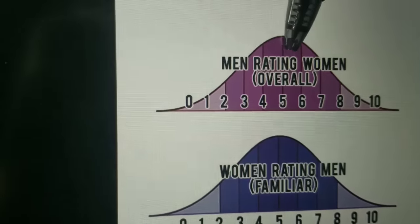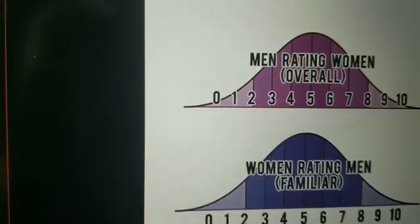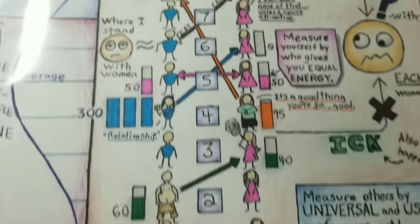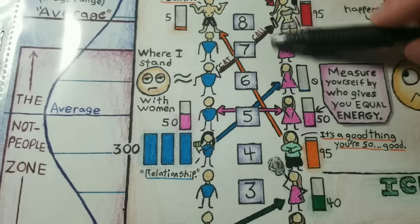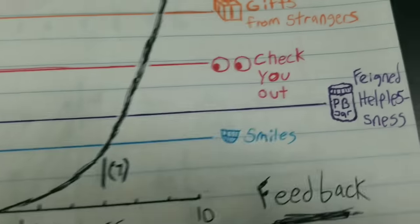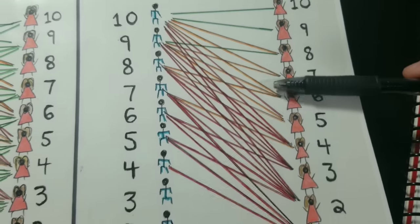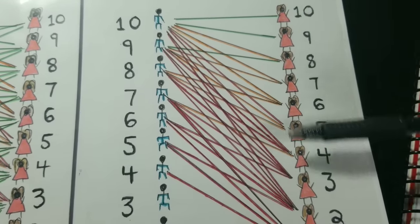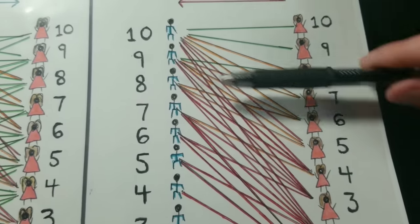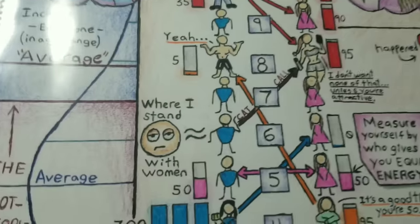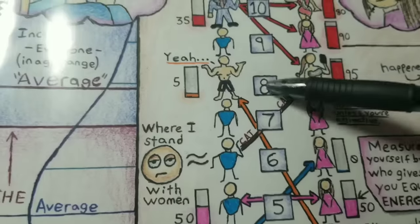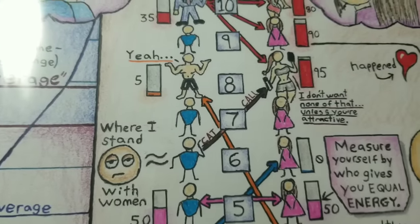A lot of guys just go after strange women forever and wonder why it's not working — it's because you're here when they don't know you and here when they do know you. So once you get your feedback, identify who you're getting it from. When I got those looks on the street, they were from women in this range, which fits this model. And when I asked women for a number, they told me eight — it all kind of fit together.